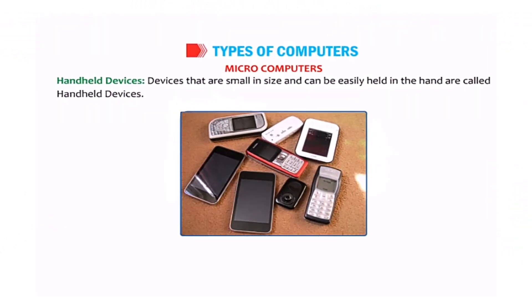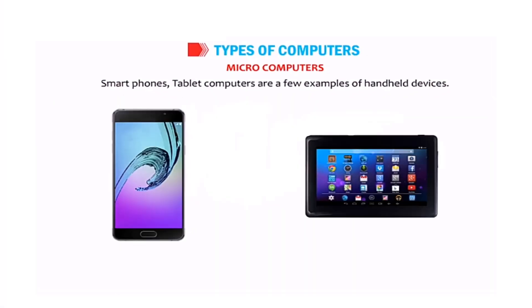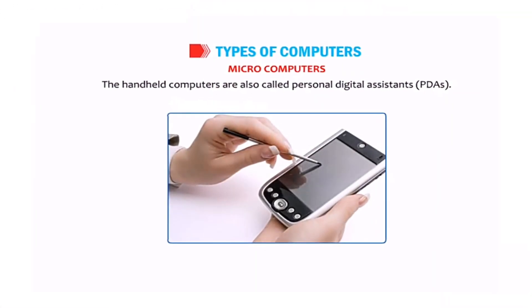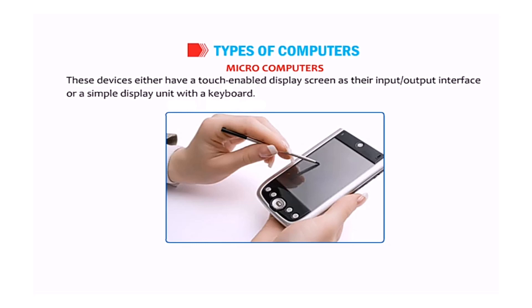Handheld devices are small in size and can be easily held in the hand — that's the reason they're called handheld devices. They can easily be carried in the pocket as well. Smartphones and tablet computers are some examples of handheld devices. Handheld computers are also called personal digital assistants, or PDAs. These devices either have a touch screen as the input/output interface or a simple display unit with a keyboard.